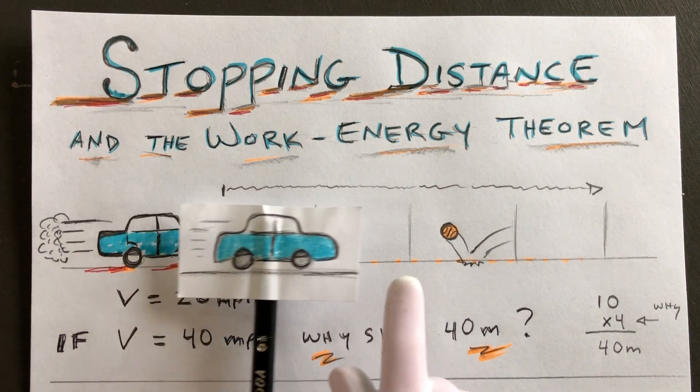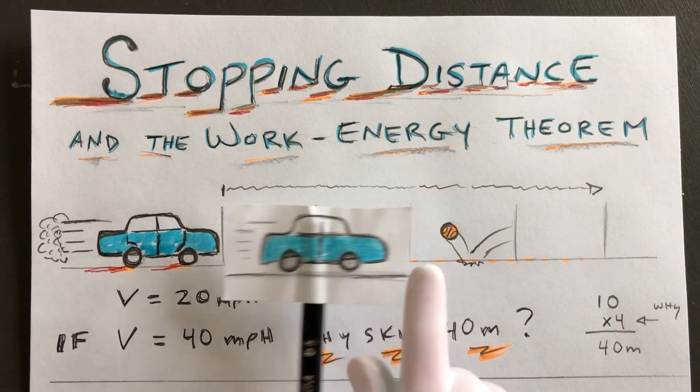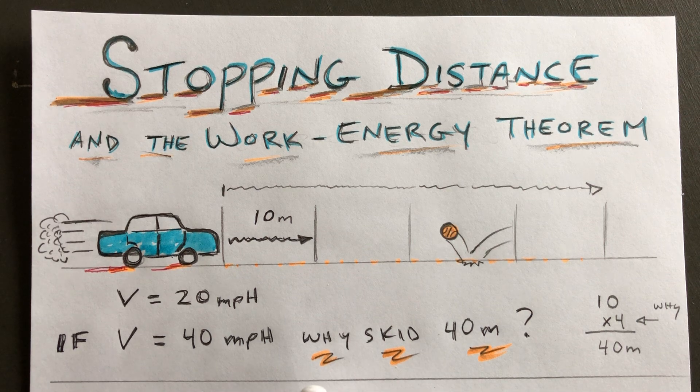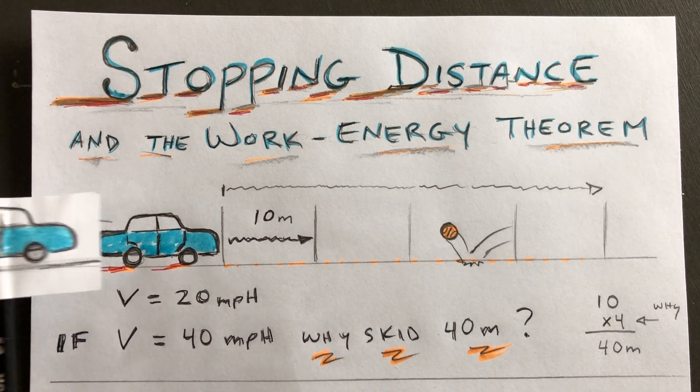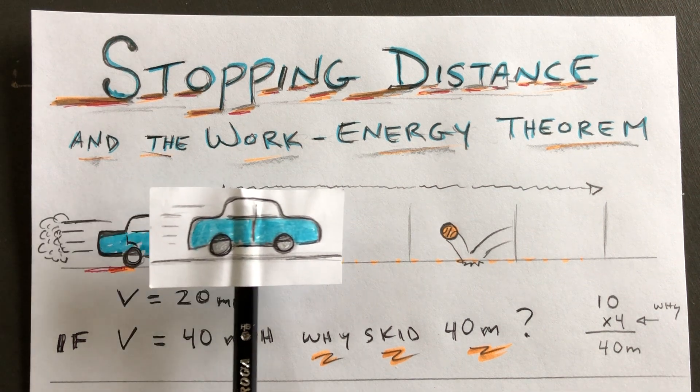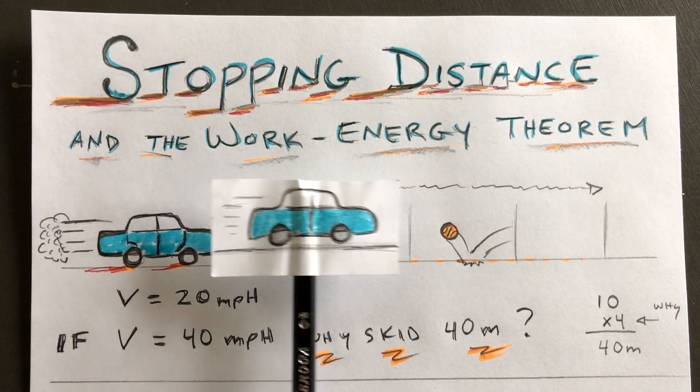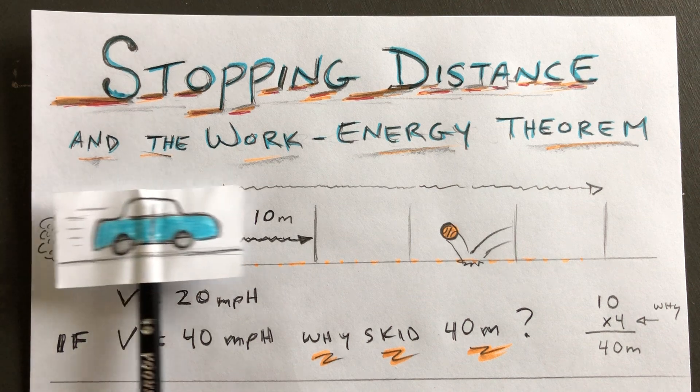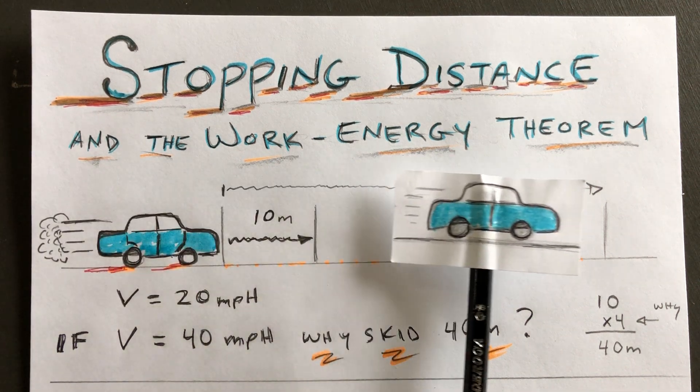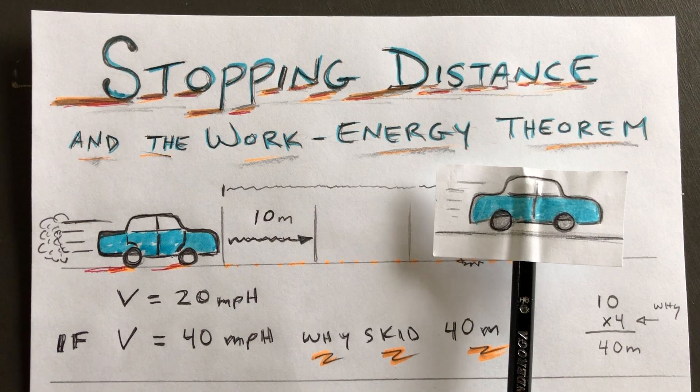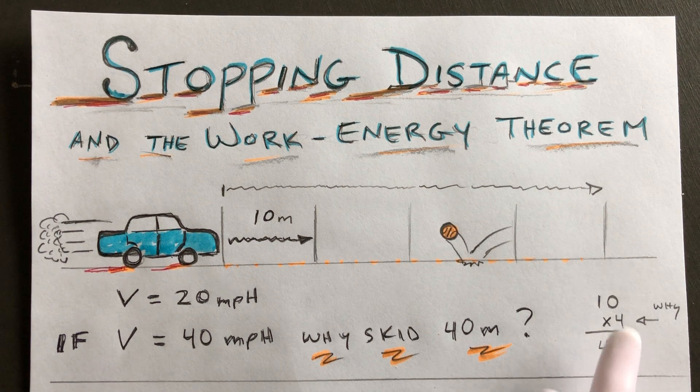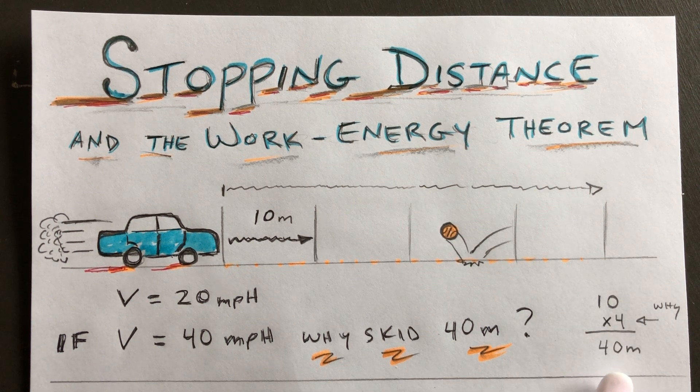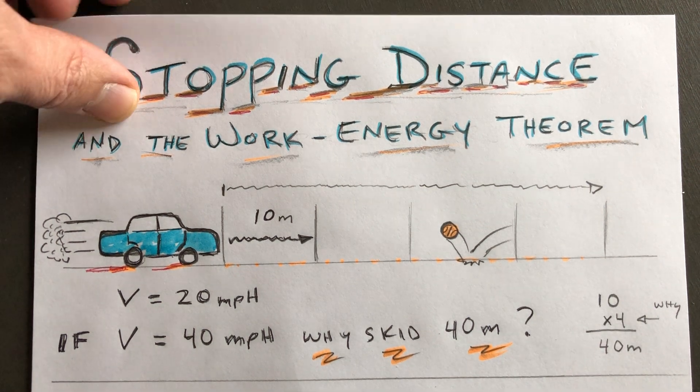Then we find out that you actually skid 40 meters. So instead of skidding 10 and 20 for doubling the speed, you actually skid 40 meters, and hopefully whoever that ball was from would be okay. So why do you skid 40? Why is it 4 times 10?